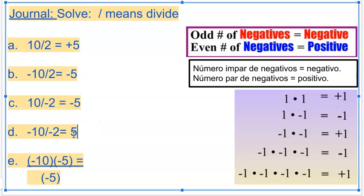Negative 10 divided by negative 2 is 5. Two negatives make it a positive.